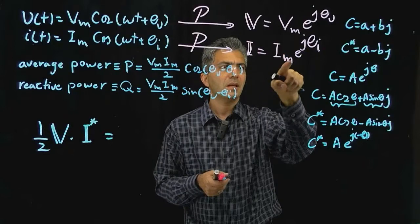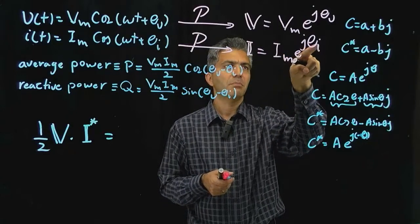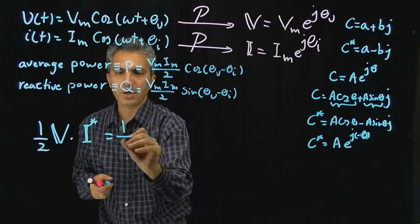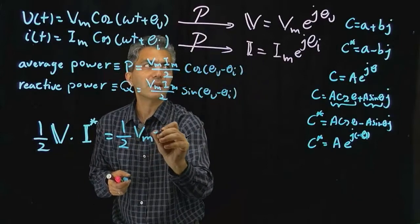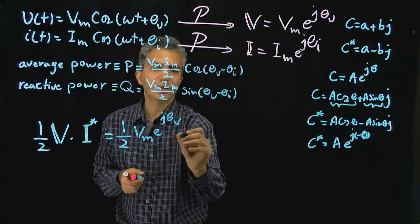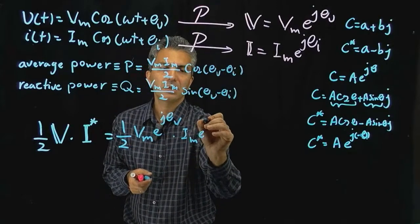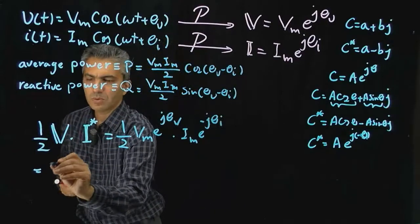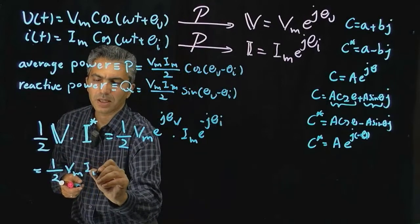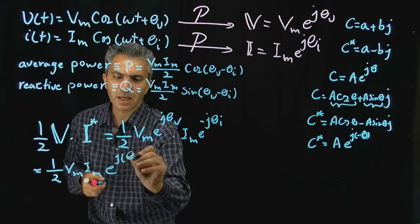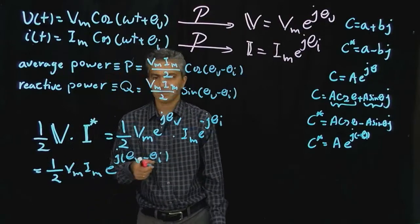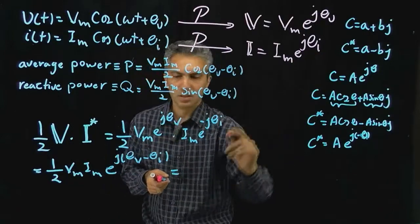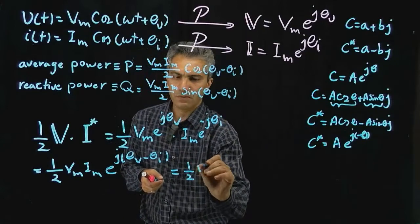So when we take the conjugate of the current phasor, all we need to do is write it as I_m · e^(−jθ_i). Now let's perform the multiplication: one-half times V_m · e^(jθ_v) times I_m · e^(−jθ_i), which gives us one-half · V_m · I_m · e^(j(θ_v − θ_i)).